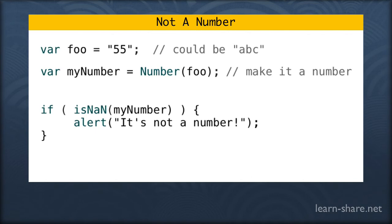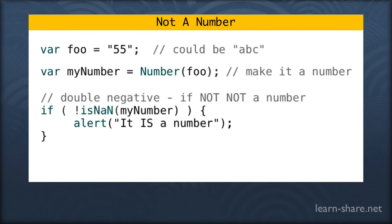Now if we want to ask if yes it is a number, we use the exclamation mark to negate the call to the function. What I'm asking is if is not not a number, meaning is it a number. In this case we'll pop up an alert box saying yes it's a number.